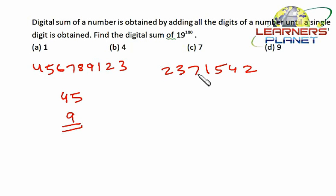2 plus 3 is 5, plus 7 is 12, 13, 13 plus 5 is 18, 18 plus 4 is 22, 22 plus 2 is 24. That means 2 plus 4, finally we are getting 6.